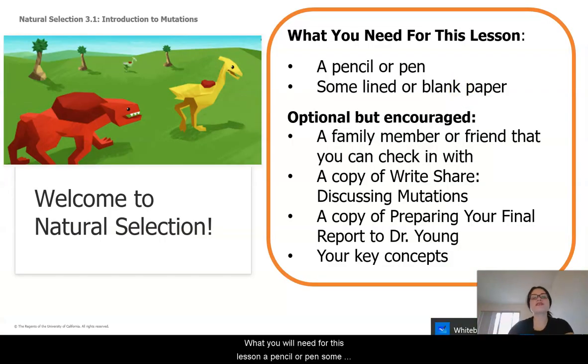So, what you'll need for this lesson: a pencil or pen, some lined or blank sheets of paper, optional but encouraged, a family member or friend you can check in with, a copy of Write Share: Discussing Mutations, a copy of Preparing Your Final Report to Dr. Young, and your key concepts.